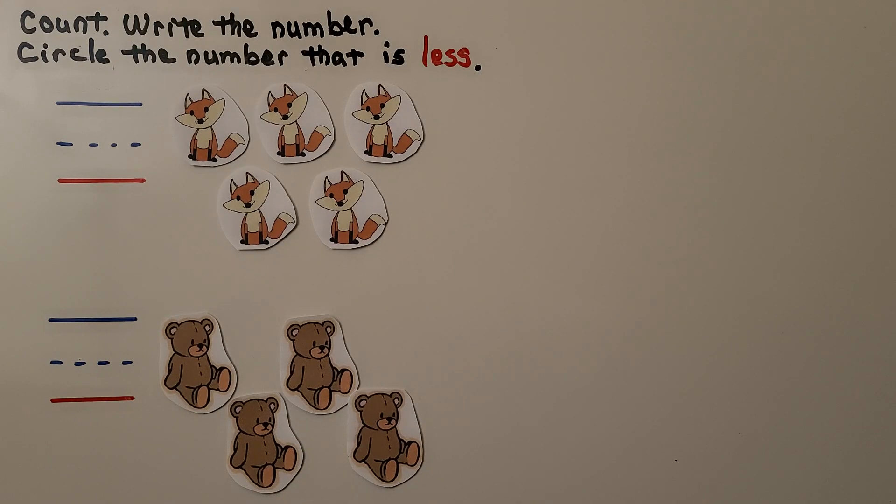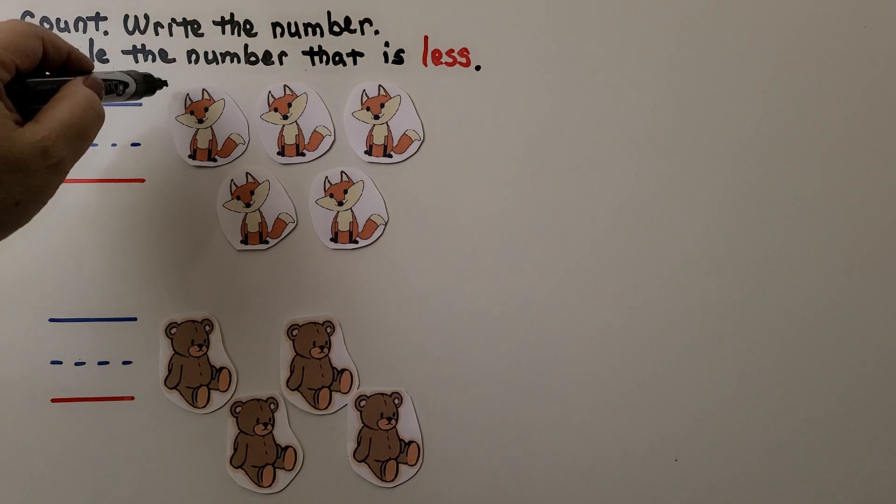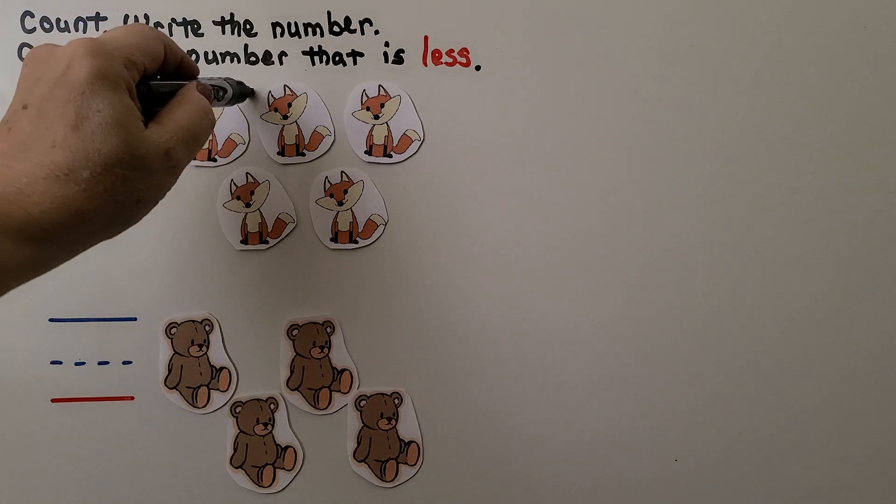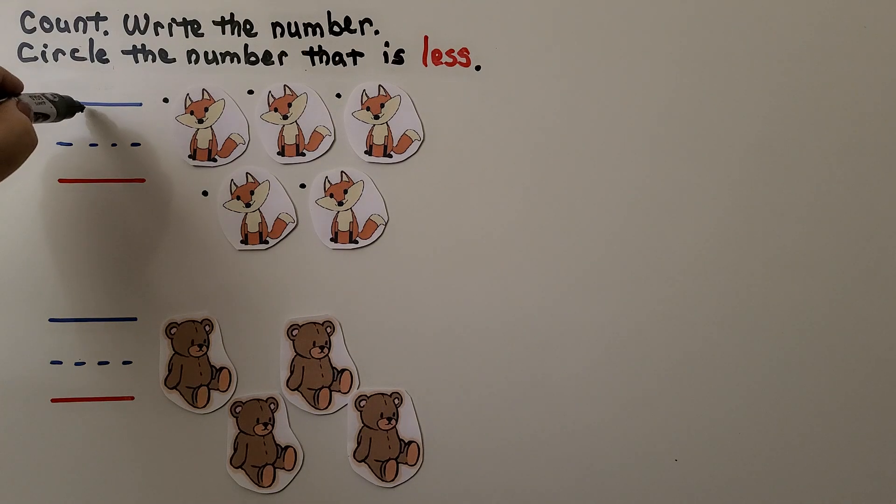Here we need to count, write the number, and circle the number that is less. We can count how many foxes there are. I count 1, 2, 3, 4, 5. We can write the number 5.